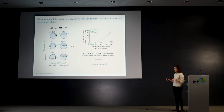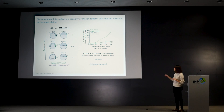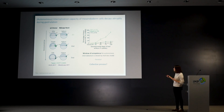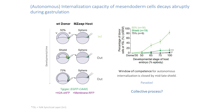What we thought could explain both observations is that maybe everything is much more collective than we thought — perhaps these early cells that can internalize in the transplants by themselves are able to somehow drive the later cells to the inside of the embryo.